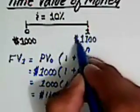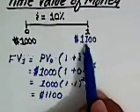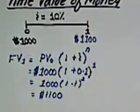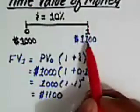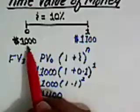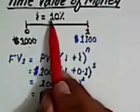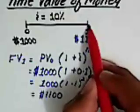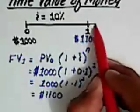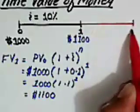And this will become equal to one thousand one hundred dollars. So the answer is one thousand one hundred dollars — that is the amount at the end of one year. Now, what would be the total amount in our bank account if we deposit this one thousand at a compound annual interest rate of ten percent for two years?